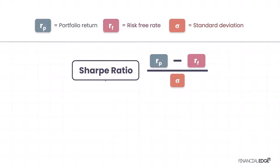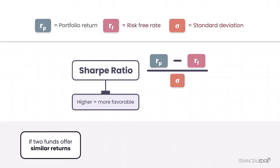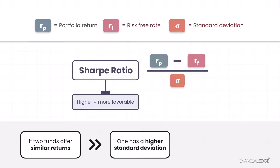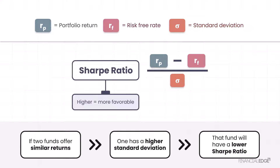As you may have guessed, the higher the Sharpe Ratio, the more favourable an investment return is relative to the risk being taken. Looking at it from another angle, if two funds offer similar returns but one has a higher standard deviation, that fund — the one with a higher standard deviation — will have a lower Sharpe Ratio. And the lower Sharpe Ratio indicates less return for every unit of risk taken by that portfolio manager.